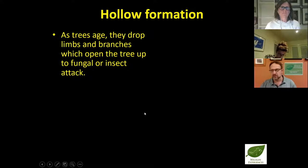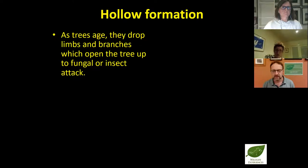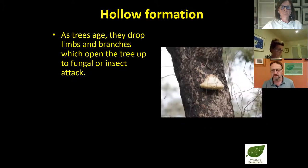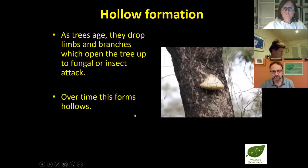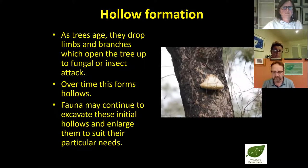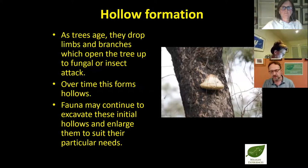As trees age or storms pass through, they drop their limbs and branches, which can open the tree to fungal or insect attack — beetles lay eggs and live on the decaying wood matter, and fungi start to grow within the tree. Here we have a bracket fungus growing on the edge of a tree; this is the fruiting body of the fungus that is actually growing inside that trunk. Over time this forms hollows — small ones to start with — and then animals can excavate them further to meet their own needs, eventually making them suitable for other species as well.